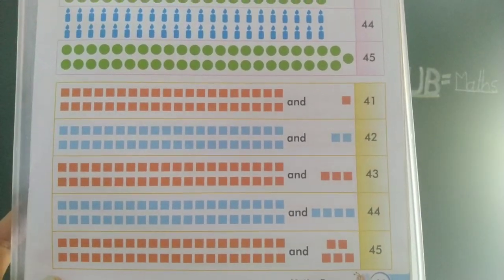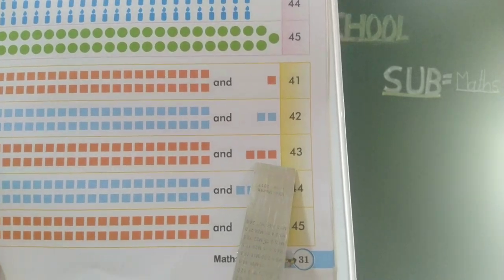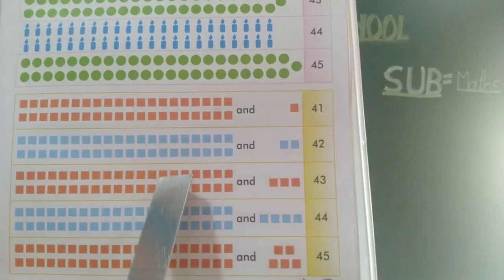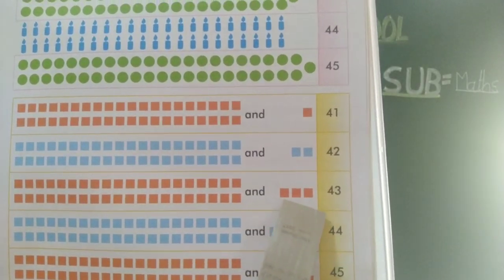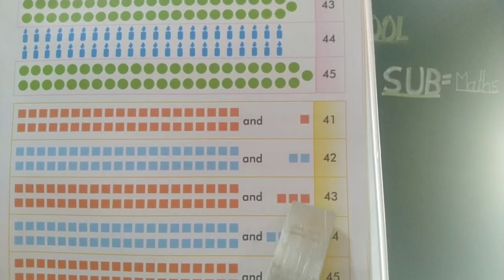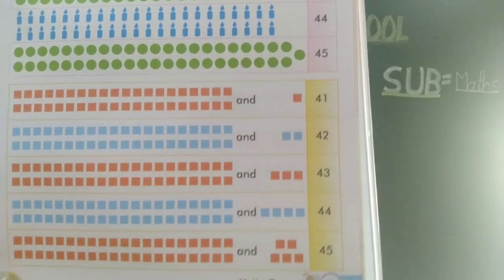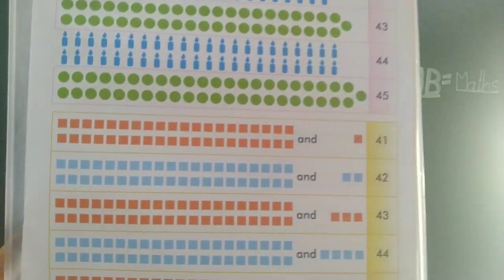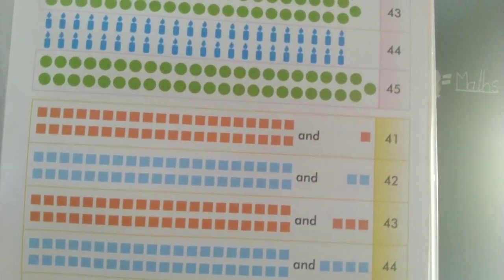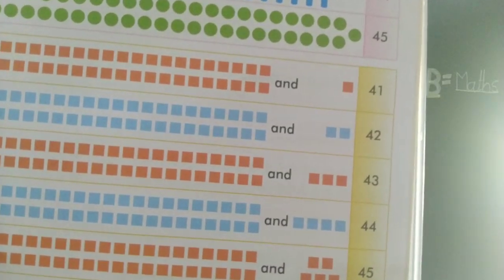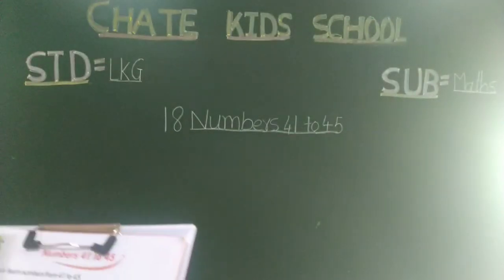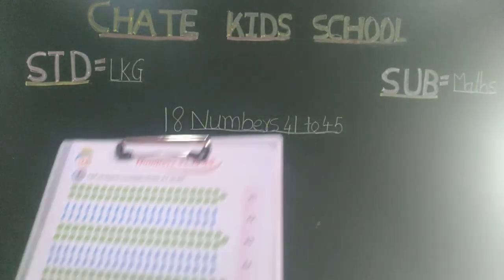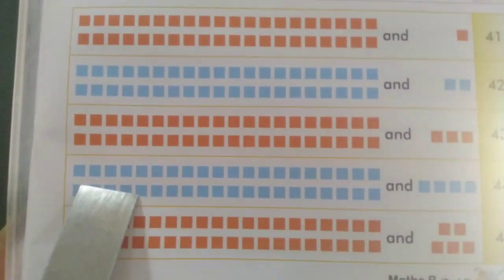40 and 3 — 40 and 3: 1, 2, 3 — 43. 40, 40 and 43, okay? These are the count of the count. Okay, the next one we have.